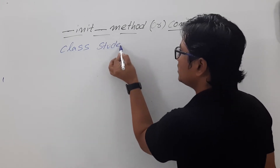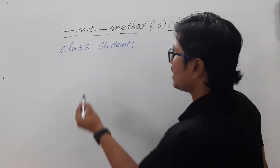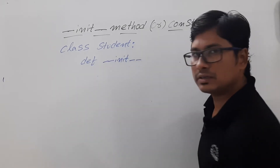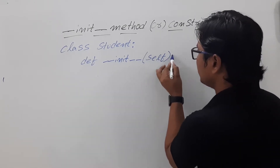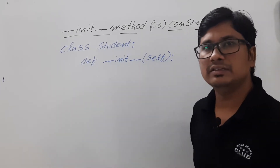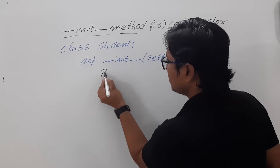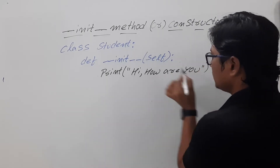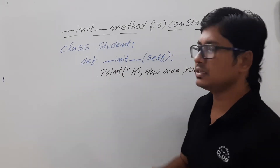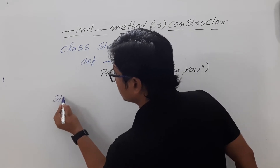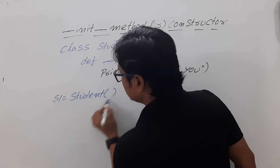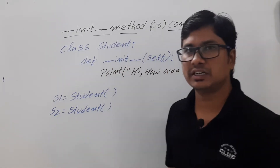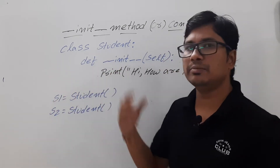First, let me create a class using the keyword 'class' and name it 'Student'. Inside the class I'm defining an __init__ method: def __init__(self). The purpose of 'self' I will discuss later — it is similar to the 'this' reference in Java. Inside the method I'm writing print('Hi, how are you'). Now I am creating an object s1 of the Student class, and similarly creating another object s2 of the Student class.